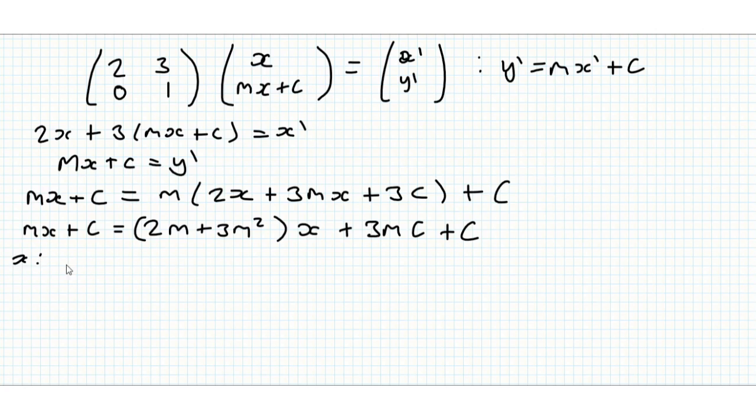So comparing x coefficients we get m is equal to 2m plus 3m squared subtracting m from both sides gives us 3m squared plus m is equal to 0. This implies m multiplied by 3m plus 1 is equal to 0 which gives us m equals 0 or m is equal to minus 1 third.